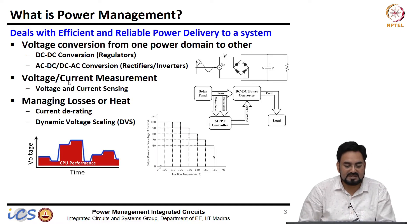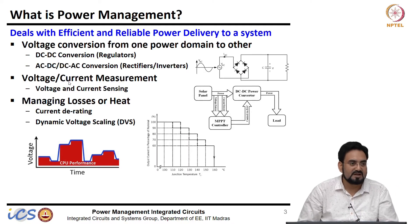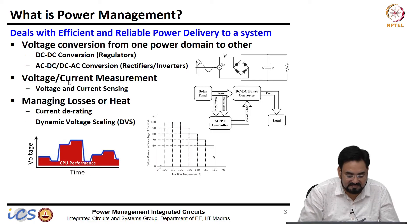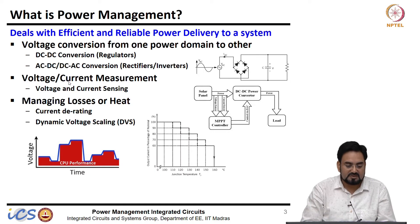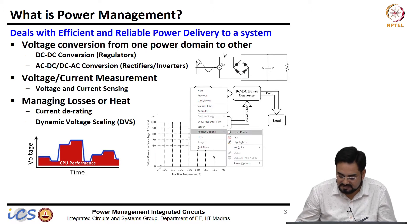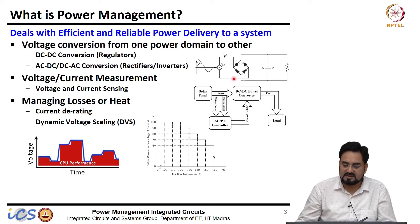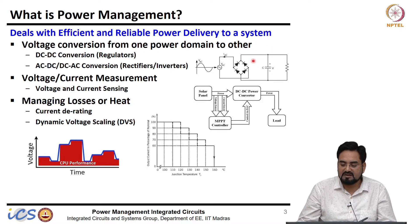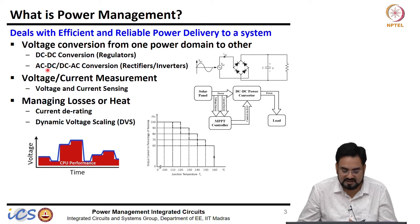Power management can also involve AC-to-DC or DC-to-AC conversion, which we call rectifiers and inverters. For example, if you have an AC input coming from an AC line at 220 volts RMS at 50 hertz, you require a rectifier — as shown on the right-hand side — which converts it to DC. All the ripples are filtered with a capacitor and you get a DC voltage. That is AC-to-DC conversion, or a rectifier.